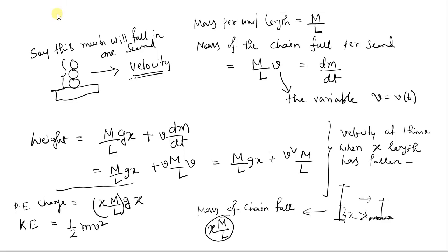Equating PE and KE gives us half of x M by L times v squared equals x M by L times gx. This gives you v squared equals 2gx. This is a simple result.